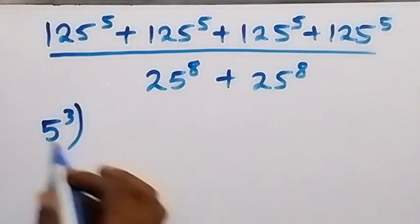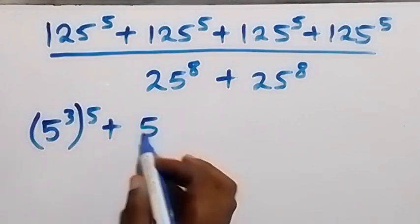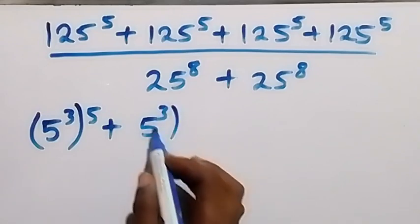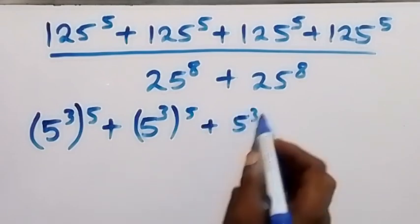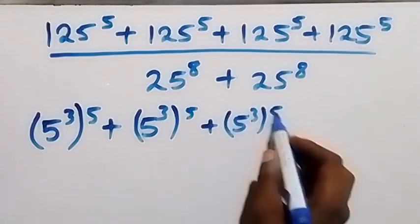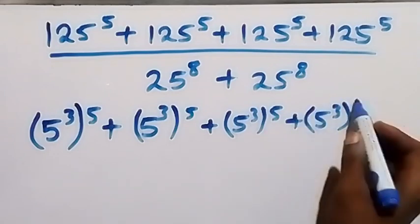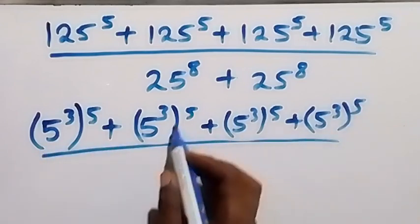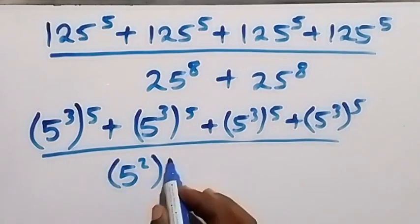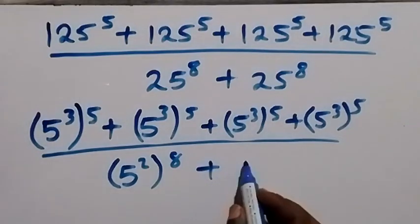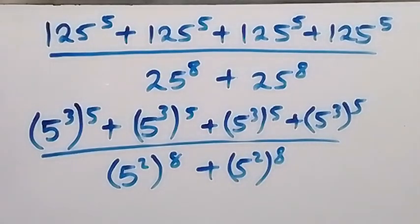Then raised to power 5 from here. Plus, we also have 5 raised to power 3, raised to power 5, plus 5 raised to power 3 raised to power 5, plus 5 raised to power 3 raised to power 5. Divided by 5 squared — that's 25 — raised to power 8, plus 5 squared raised to power 8.